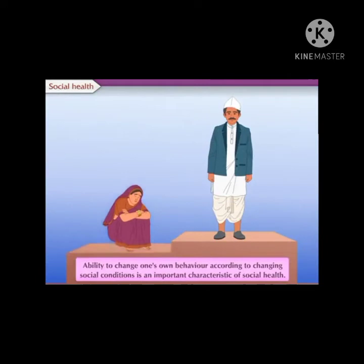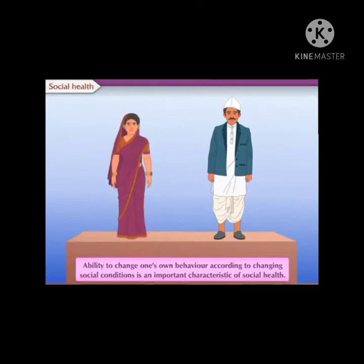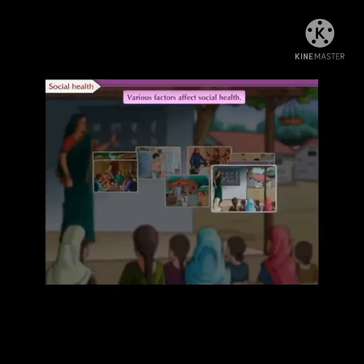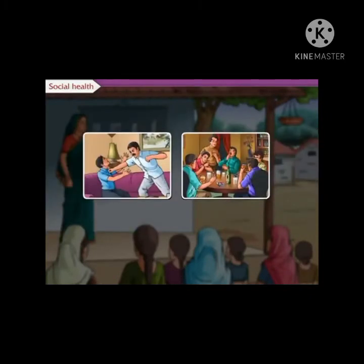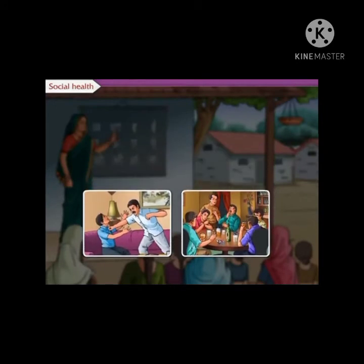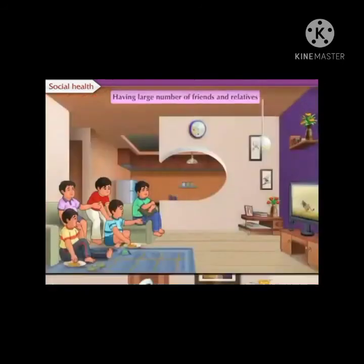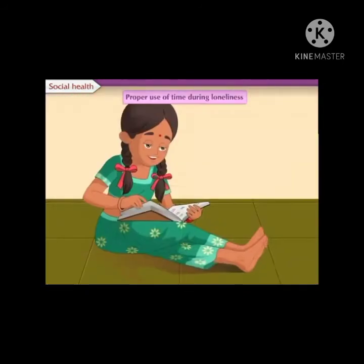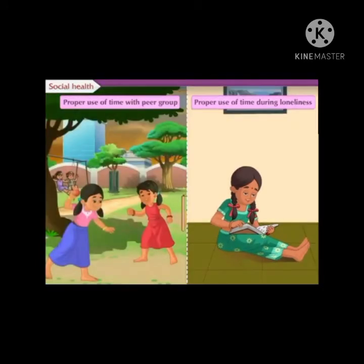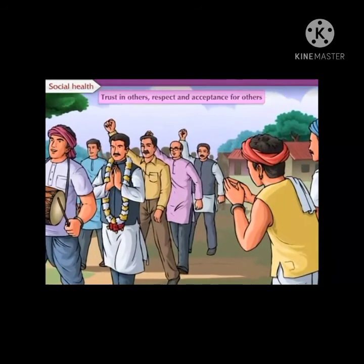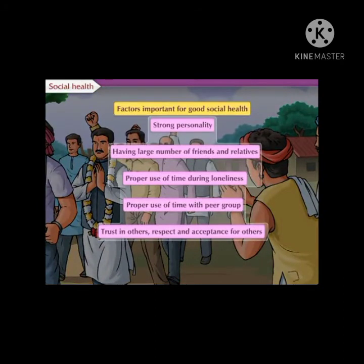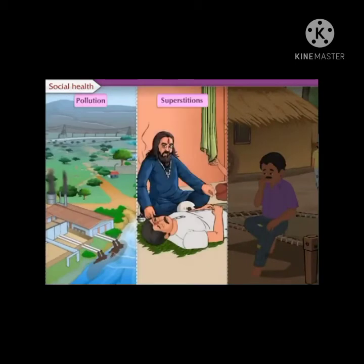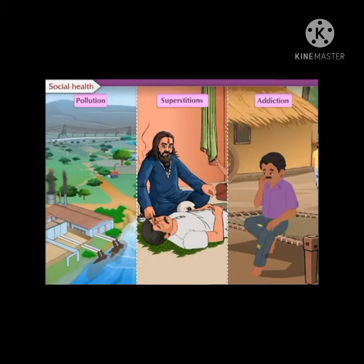Ability to change one's own behavior according to changing social conditions is an important characteristic of social health. Various factors affect social health — some help to maintain good social health while others contribute to disturbing it. Factors like strong personality, having a large number of friends and relatives, proper use of time during loneliness and with peer group, trust in others, and respect and acceptance for others are important for good social health. Whereas factors like pollution, superstition, addiction, etc. disturb social health adversely.